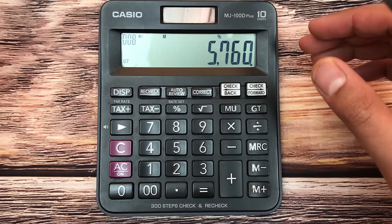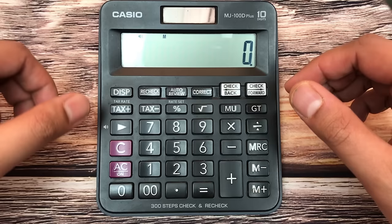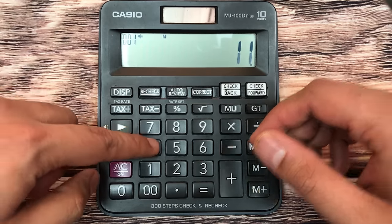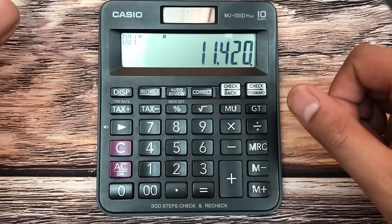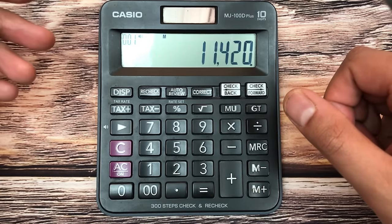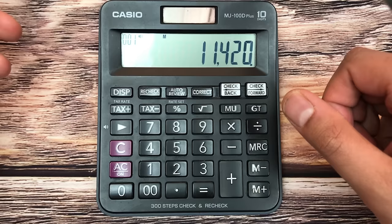Let's move to another example. Let's say you have an item and the price of that item is 11420, and you want to find out what will be the final price after 10% discount. Again, you will multiply it with 90 and then press this percentage button.